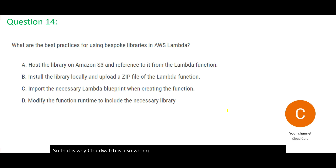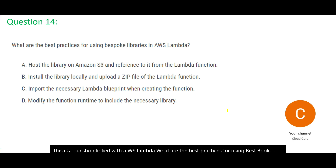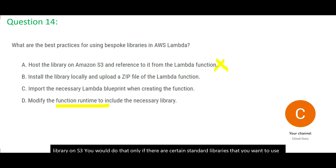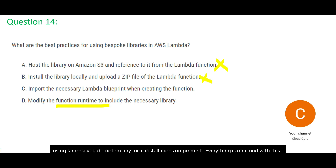This next question is linked with AWS Lambda — what are the best practices for using bespoke libraries? Bespoke means custom libraries that you create on your own. The best way to use such things is always through function runtime — that is the thumb rule. Option A says host the library on S3 — you would do that only for standard libraries, not custom ones, so A is wrong. Option B says install the library locally — when using Lambda you do not do any local installations on-prem; everything is on the cloud. Option C talks about importing a Lambda blueprint — there is no need for that. So function runtime is the correct answer.